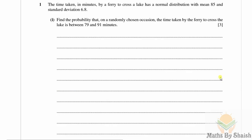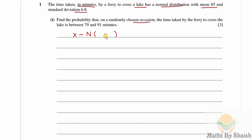Question number one: the time taken in minutes by a ferry to cross a lake has a normal distribution with mean 85 and standard deviation 6.8 minutes. Find the probability that on a randomly chosen occasion the time taken by the ferry is between 79 and 91 minutes. If X is the time taken in minutes, X is normally distributed: N(85, 6.8²).